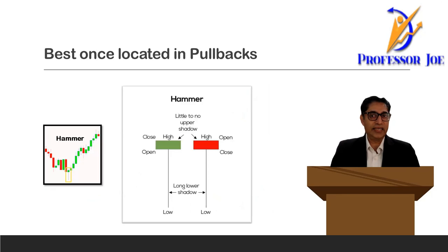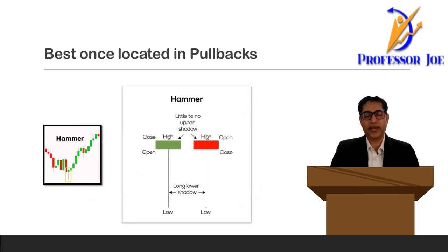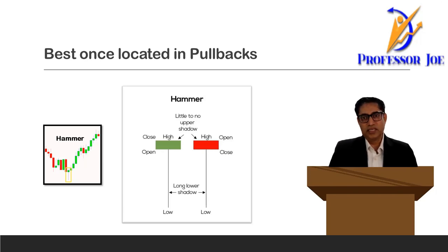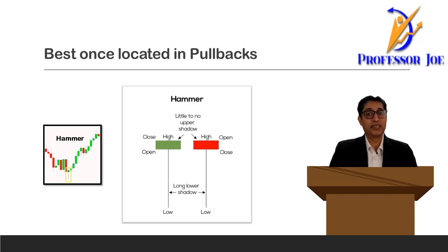There are two ways of entering into a trade. One is called a pullback strategy and the second is called a breakout strategy. We will look at both, especially when you are trading candlestick patterns. For a bullish candlestick pattern, it will normally be at a breakout of a previous resistance, or the continuation would be a pullback at a moving average. So these are the two areas where we will be looking for a good candlestick pattern.